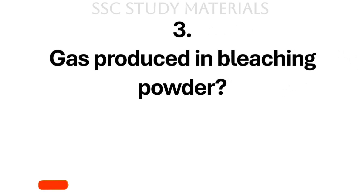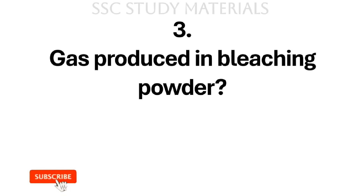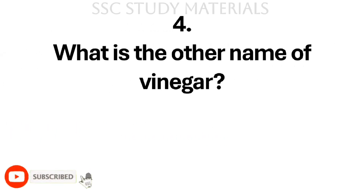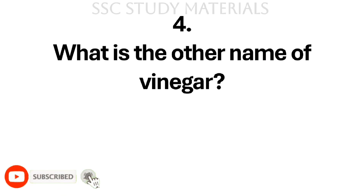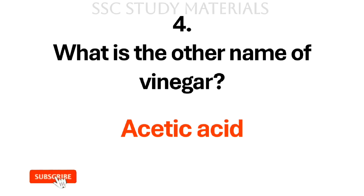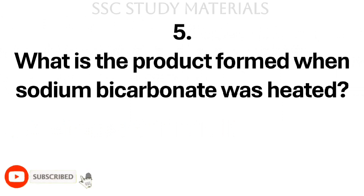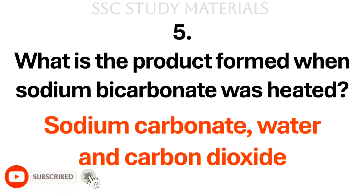Question No. 3: What gas is produced in bleaching powder? Answer: Chlorine gas. Question No. 4: What is the other name of vinegar? Answer: Acetic acid. Question No. 5: What is the product formed when sodium bicarbonate is heated? Answer: Sodium carbonate, water and carbon dioxide.